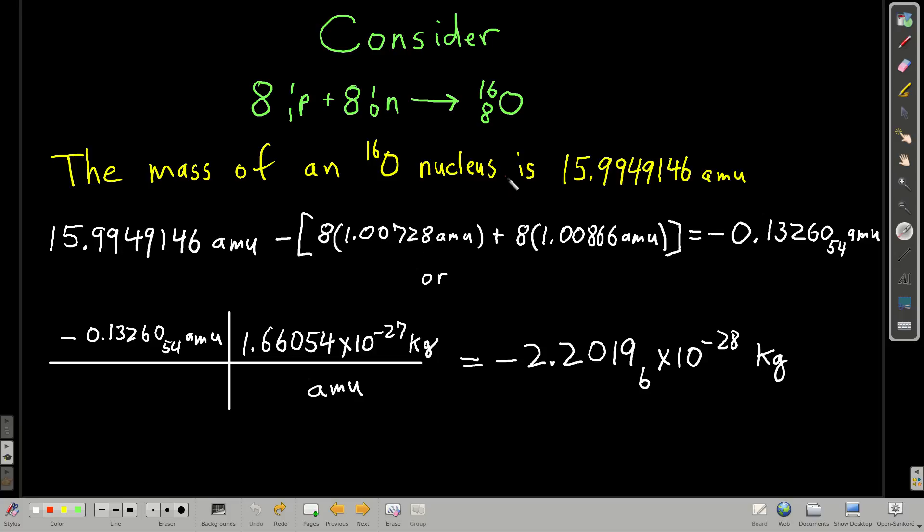So let's look at an isotope of oxygen, oxygen 16. In an oxygen 16 nucleus, there are eight protons and eight neutrons. The mass of an oxygen 16 nucleus ends up being this number here, 15.9949146 AMUs.